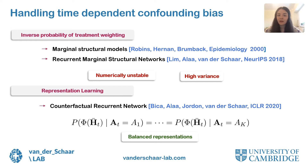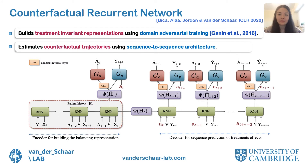In our work, we introduce the counterfactual recurrent network and propose instead building treatment-invariant representations that can break the association between patient history and treatment assignments. At each time step t, we build a representation of the patient history that is invariant to the assigned treatment, and using this representation we can obtain unbiased estimates of the counterfactual outcomes. The counterfactual recurrent network is a sequence-to-sequence model capable of estimating for each patient potential outcomes for intended sequences of future treatments conditioned on the patient history. To handle the bias from time-dependent confounders, we build at each time step a balancing representation through domain adversarial training.